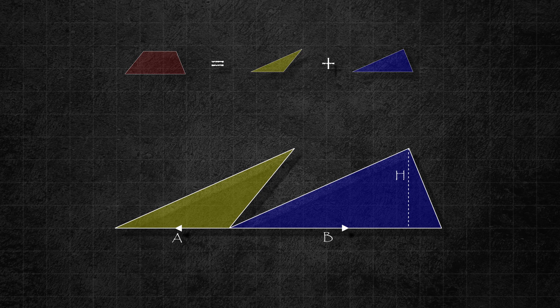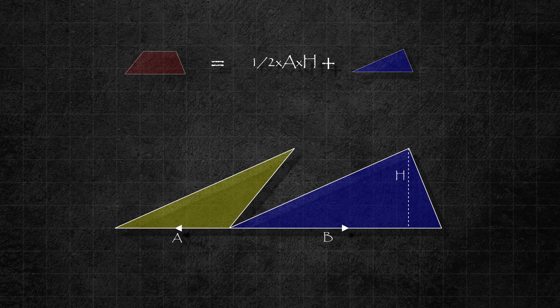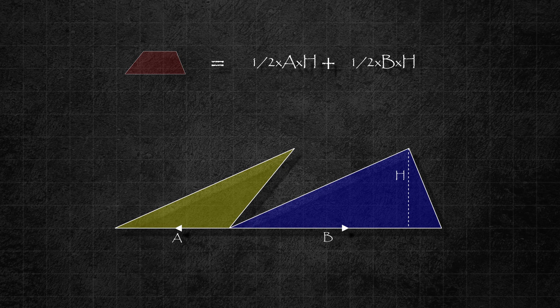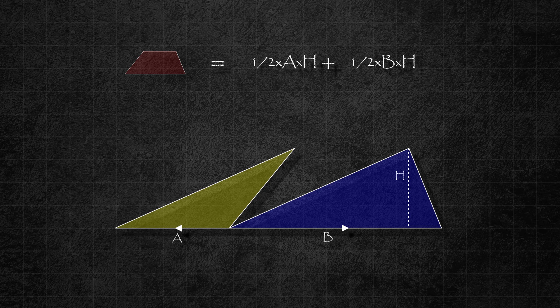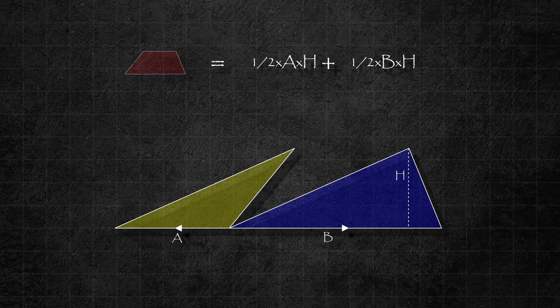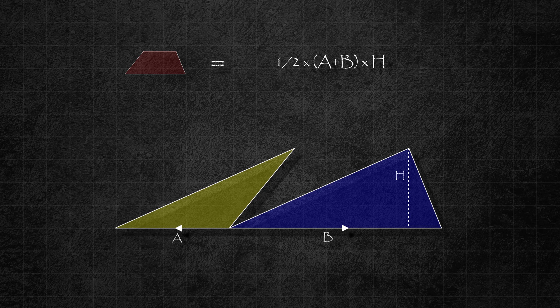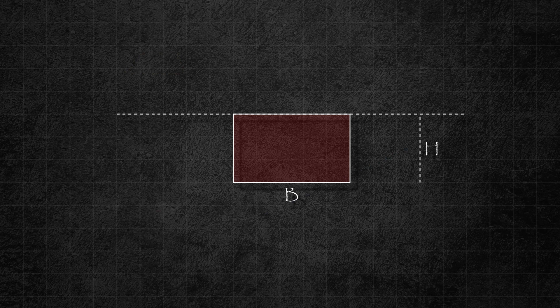We know how to calculate the area of a triangle. The area of the yellow triangle is half times a times h, and the area of the blue triangle is half times b times h. By adding these two areas, we get the total area of the trapezoid. Since both triangles share the same height h, we can write the formula in a more compact form like this: half times (a plus b) times h.